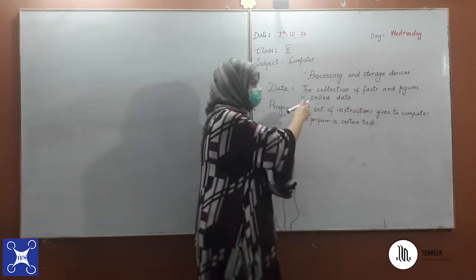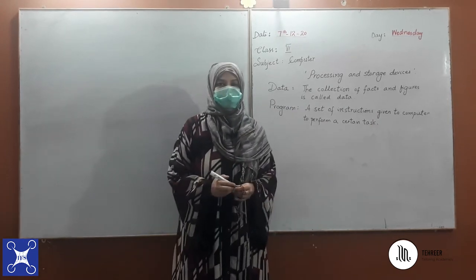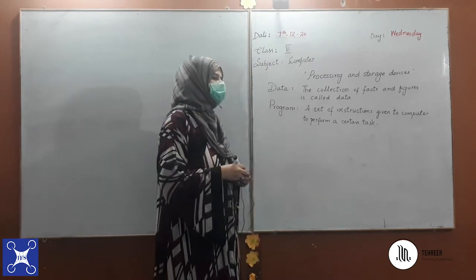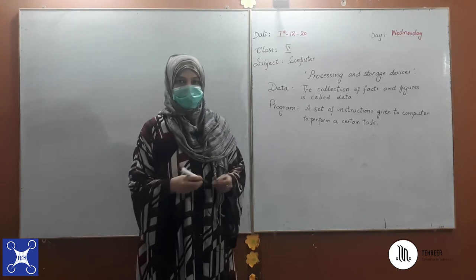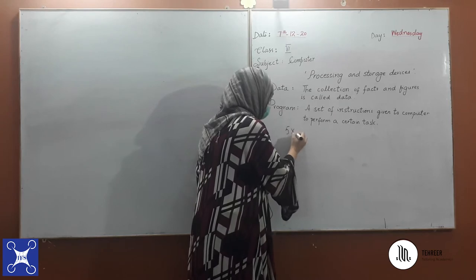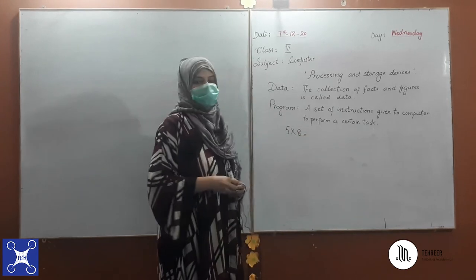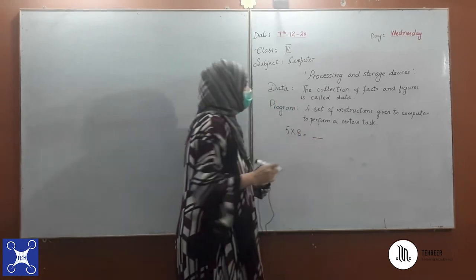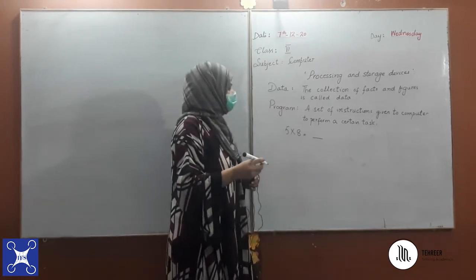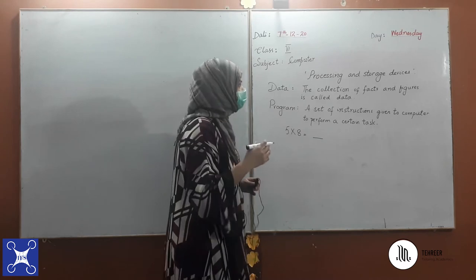For example, if you want to do a multiplication of any number — for example, you just forget the table of 5 — and if you want to find out what 5 multiplied by 8 equals, what will be the output? By giving the instruction, because there are special keys present on the keyboard, there are three parts of the computer.